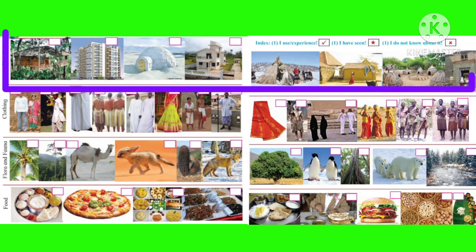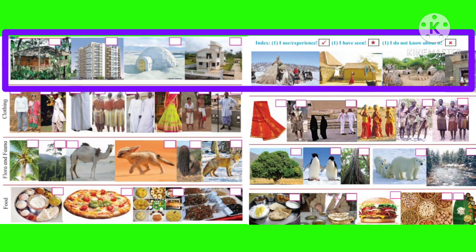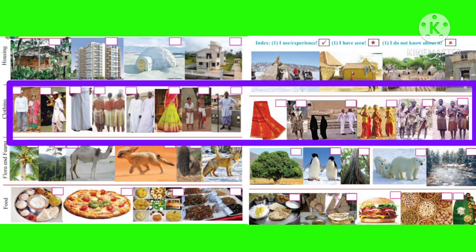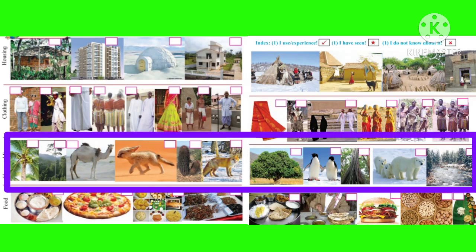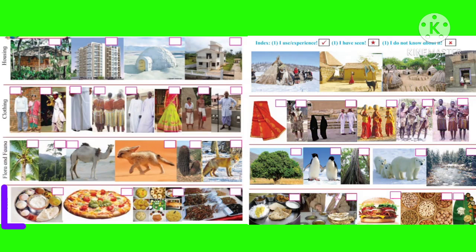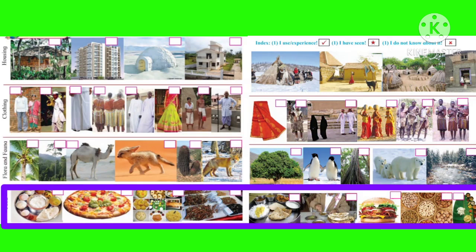Students, you can see different rows here. The first row is of housing — you can see various types of houses. The second row is of clothing — various types of attire, meaning dressing. The third row is of flora and fauna, meaning various types of plants and animals. The fourth row is of various kinds of foodstuff. You have two minutes to put tick marks, star marks, and cross marks. After that we will see some questions based on these charts.